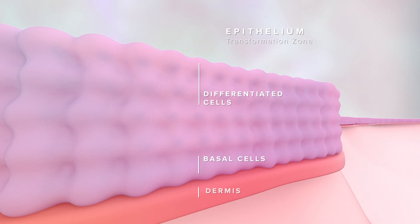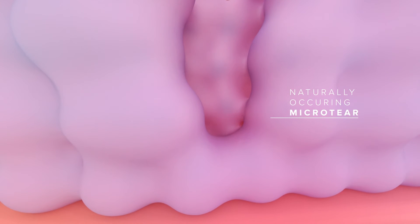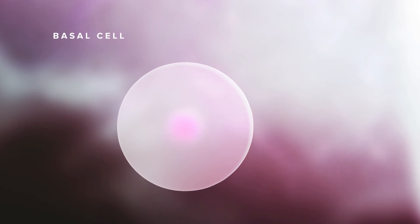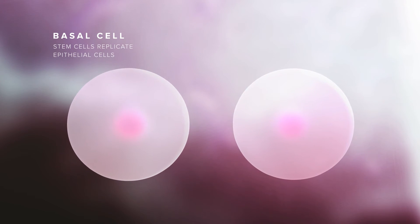The epithelial lining of the ectocervix sits above the basal cell layer, directly adjacent to the dermis. HPV most commonly infects basal cells through small micro tears in the epithelium, typically following sexual contact. It's here that stem cells replicate and then differentiate to become the cells that make up the epithelium.